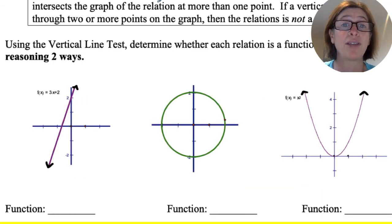Well, today we're going to be talking about the vertical line test. So the vertical line test is actually the way to see if a graph is a function. So a relation is a function if and only if no vertical line intersects the graph of the relation at more than one point. If a vertical line passes through two or more points on the graph, then the relation is not a function.